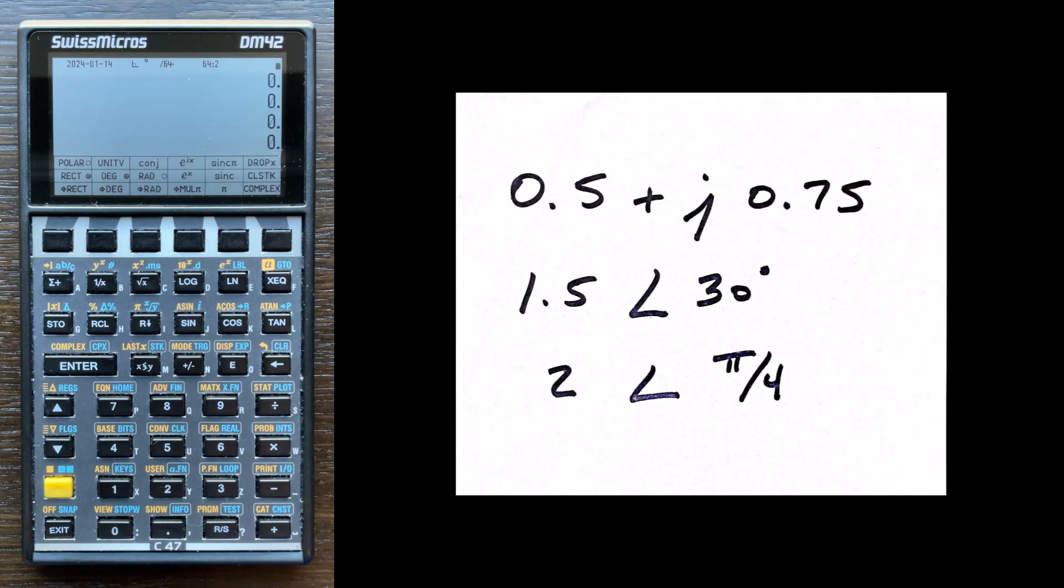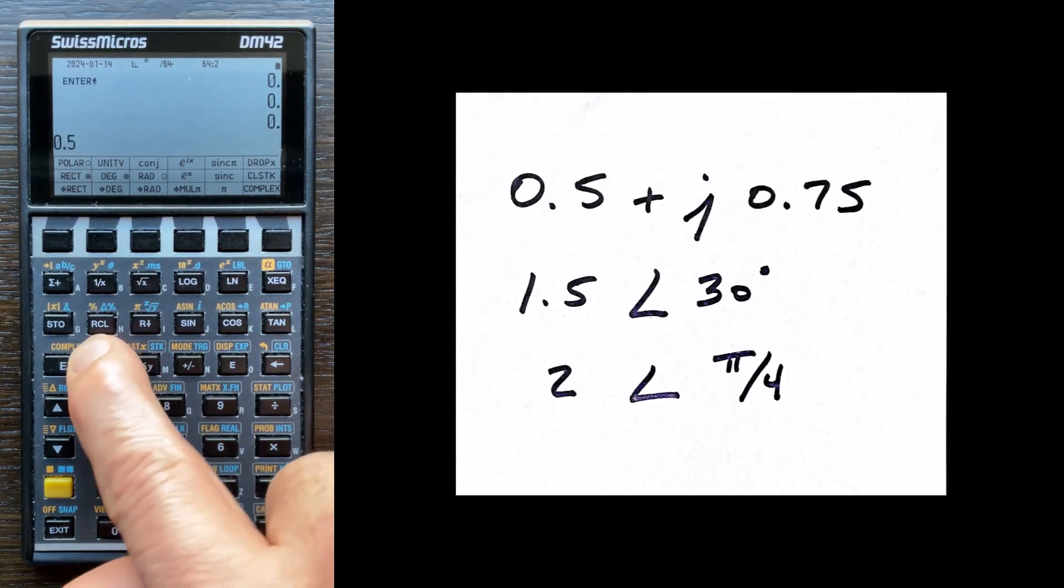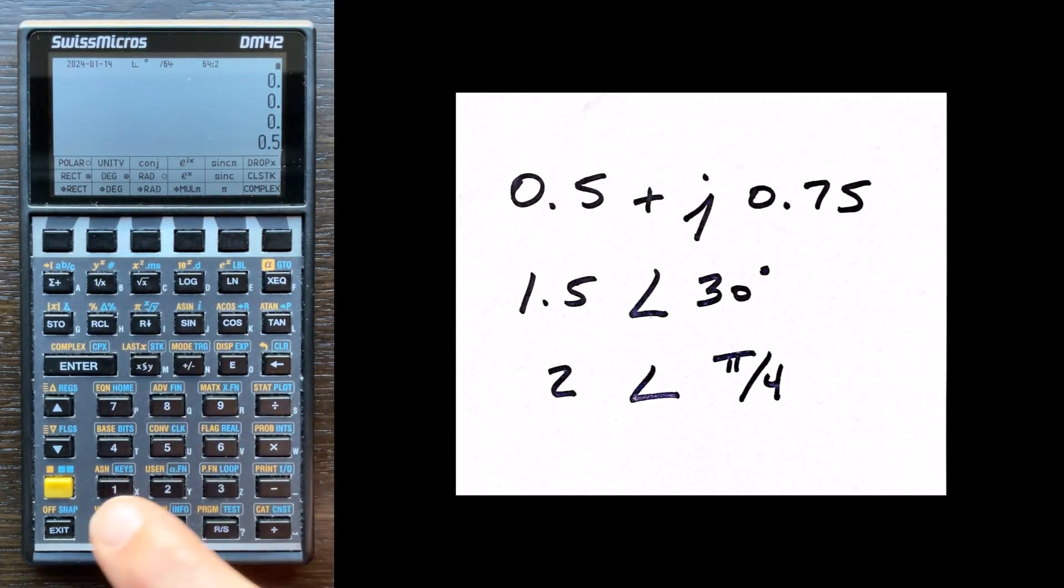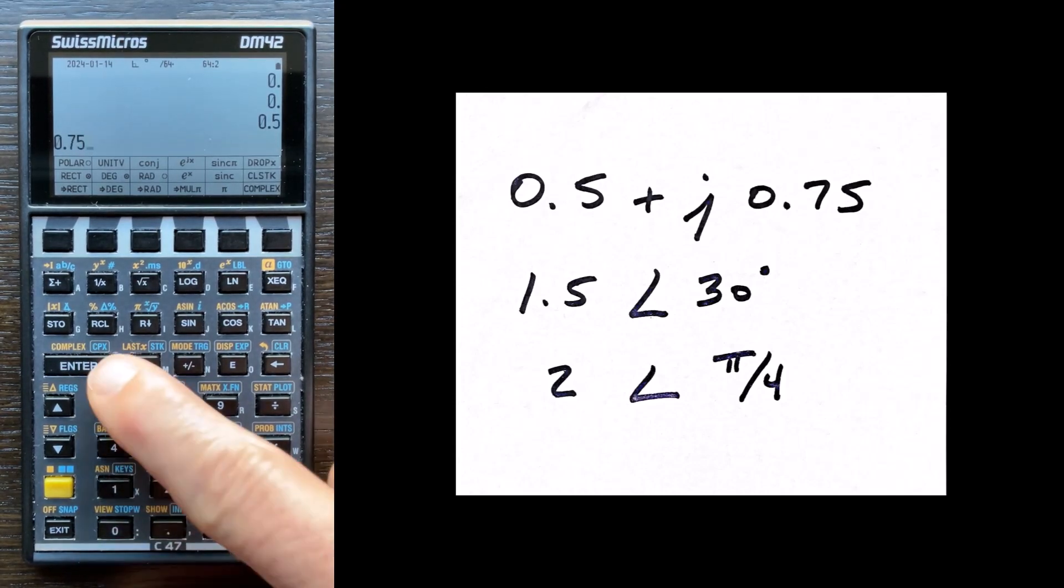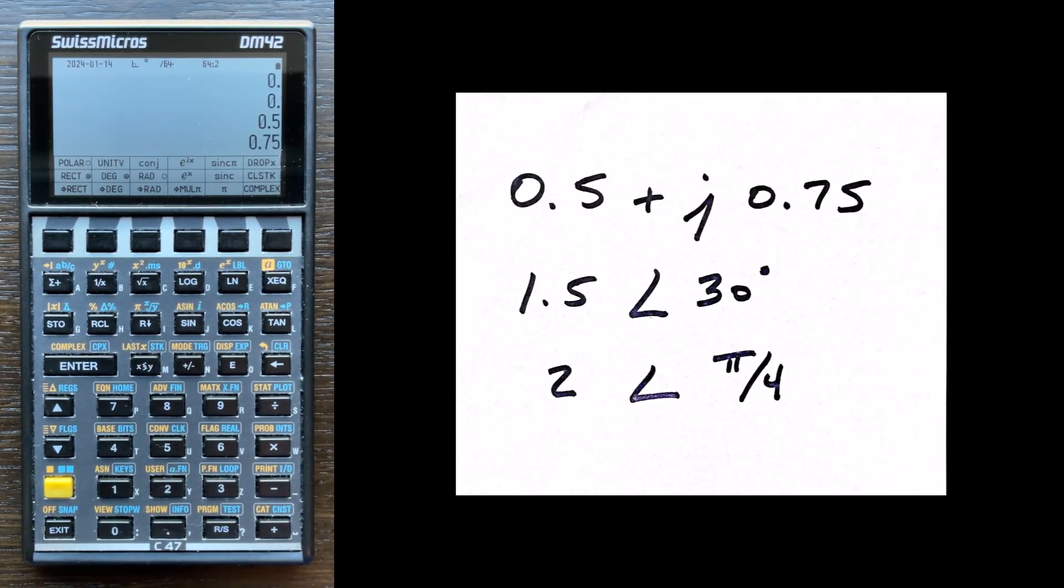Now I want to add together three complex numbers. The first complex number is in real imaginary format. So 0.5 enter, that's the real part. 0.75 enter, that's the imaginary part. And now I press the F6 key which assembles a complex number from the two numbers on the stack. It's displayed on the calculator in the same format that I have written on my paper, which is what I really like about this mode.